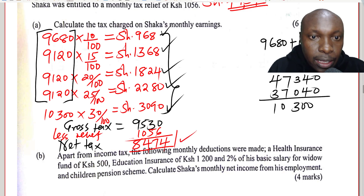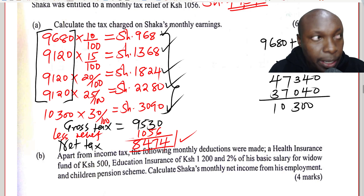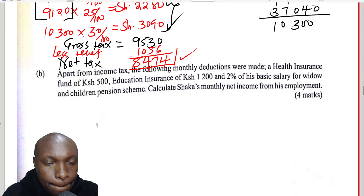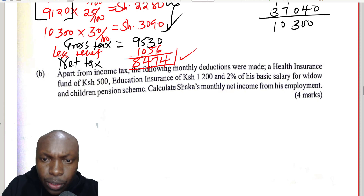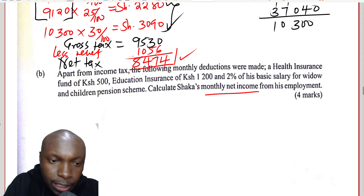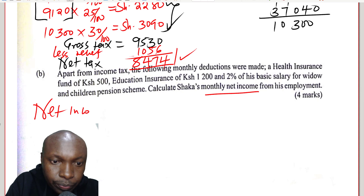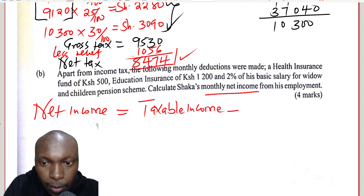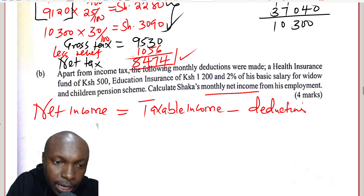So that is the tax — the net tax. That is how we calculate the first part of the question. Now we proceed to the second part: apart from income tax, the following monthly deductions are made. We are supposed to calculate the monthly net income. Net income is obtained by taking the taxable income, then subtracting all the deductions that are given.